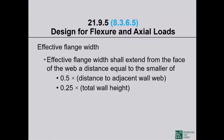Regarding effective flange width: if a shear wall has flanges, the effective flange width is half the distance to the next cross wall, or one quarter of the total wall height, whichever is smaller. So the effective flange width is one quarter of the total wall height, except you cannot encroach onto the flange of the neighboring cross wall — you can go only halfway to the other cross wall.